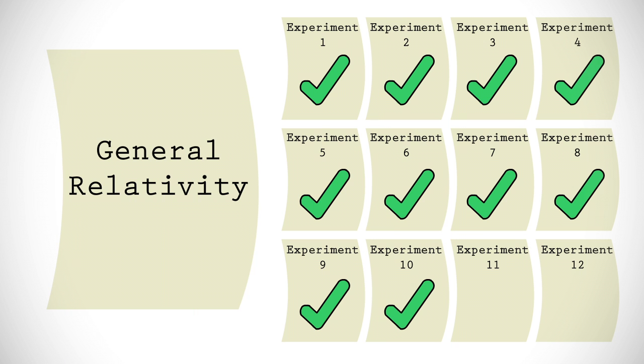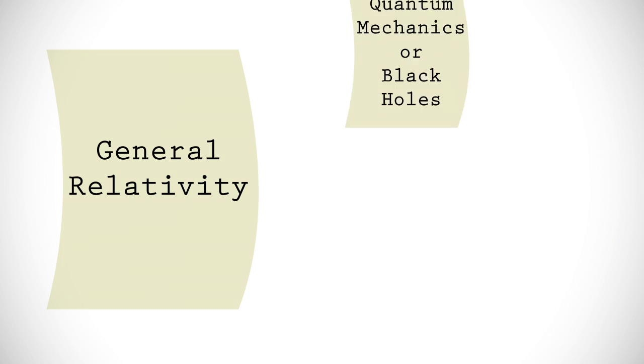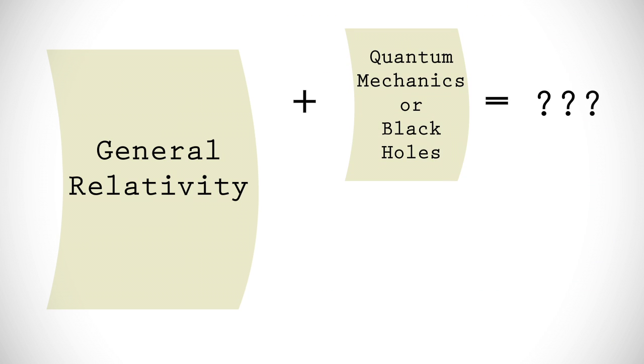Despite this obvious evidence and a slew of cosmological experiments supporting general relativity, it isn't perfect. So far, it can't be reconciled with quantum theory, and it breaks down when trying to describe objects such as black holes, suggesting that better, more complete theories exist.